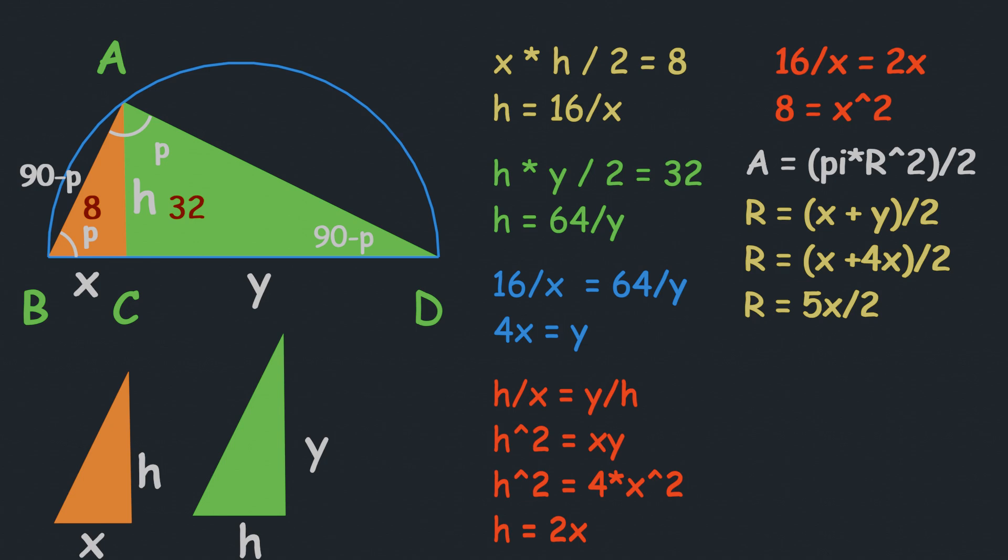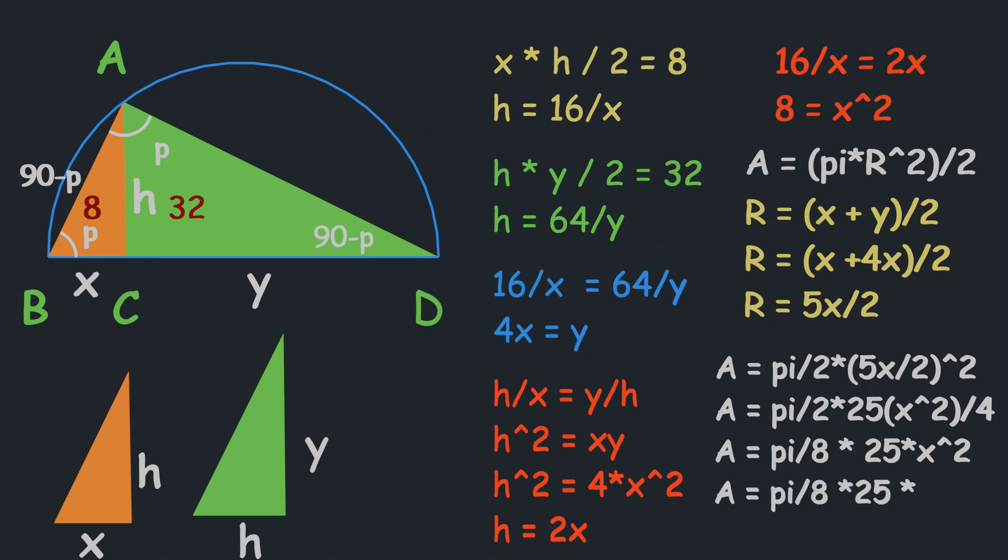The area of the semicircle is π/2 × (5x/2)². This simplifies as π/2 × 25x²/4 = π/8 × 25x². Since x² = 8, the area is π/8 × 25 × 8 = 25π, which is approximately 78.5.